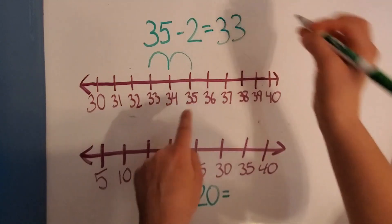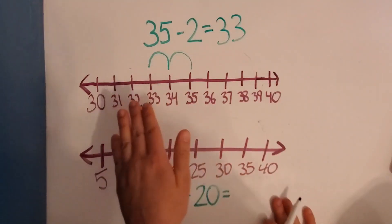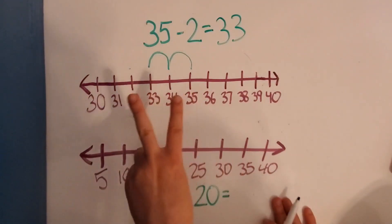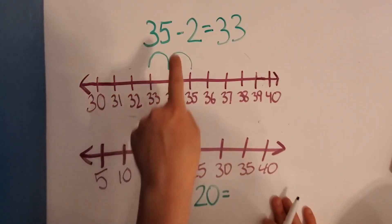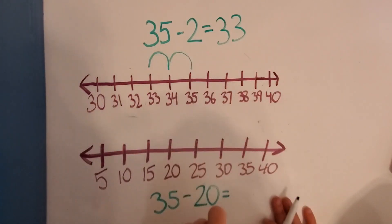33, so 35 minus 2 is 33. We counted backwards two numbers. So we went 35, 34, 33. So we can tell that 35 minus 2 equals 33.